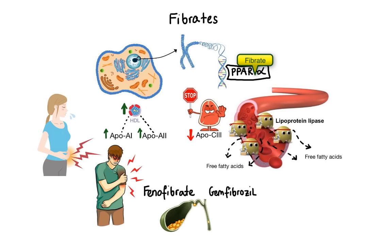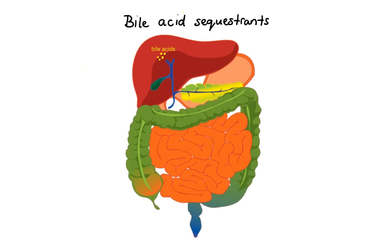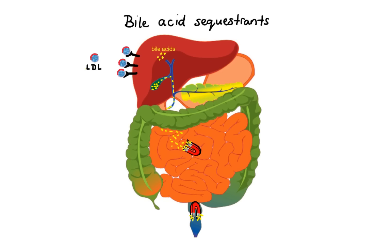The next group of lipid-lowering drugs is bile acid sequestrants. Bile acids are produced in the liver, stored in the gallbladder, and excreted into the gut, where they facilitate digestion and absorption of lipids. Bile acid sequestrants serve as anion exchange resins that bind negatively charged bile acids and salts in the small intestine. The formation of this insoluble complex prevents reabsorption of bile acids and leads to their excretion. This increase in bile acid excretion creates increased demand for their production. Since bile acids are made from cholesterol, liver cells increase their number of LDL receptors to bring in more LDL cholesterol, and the end result is decreased levels of circulating LDL.